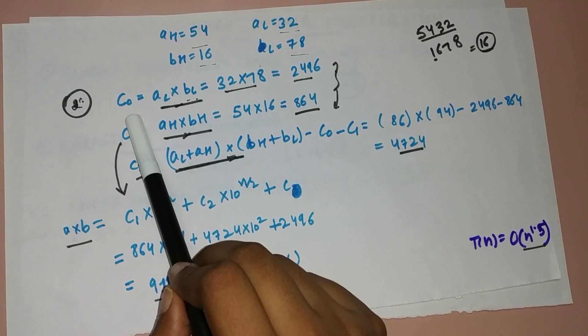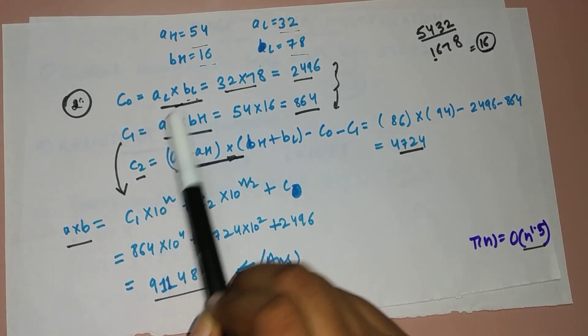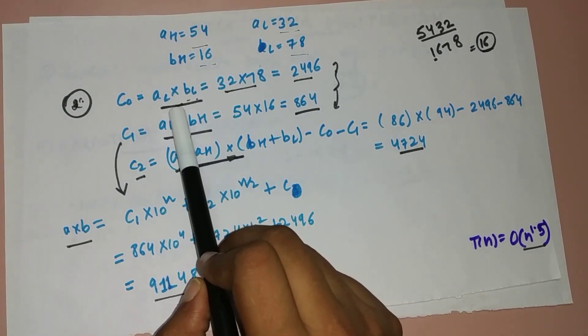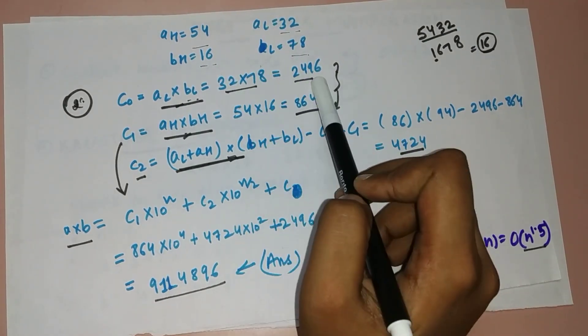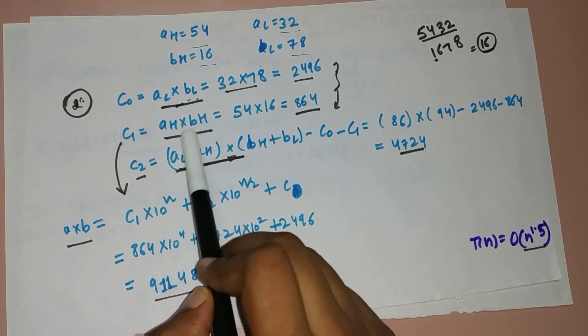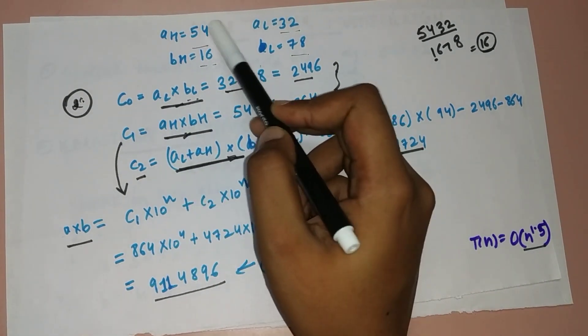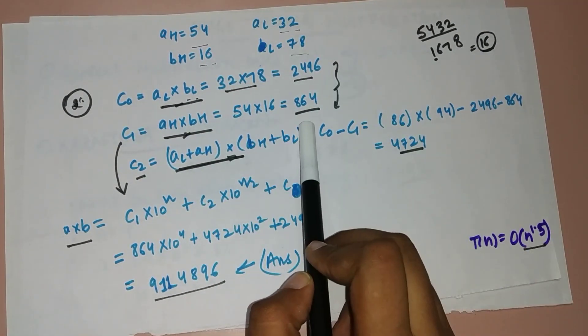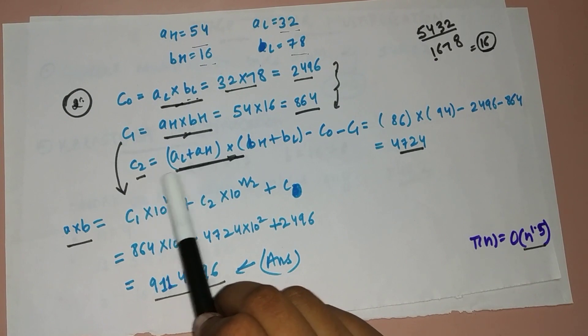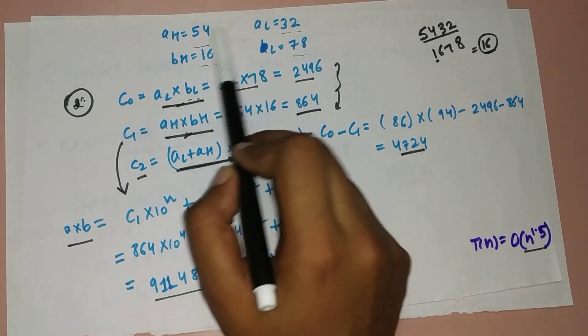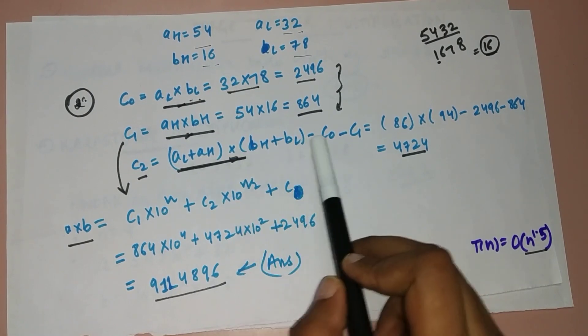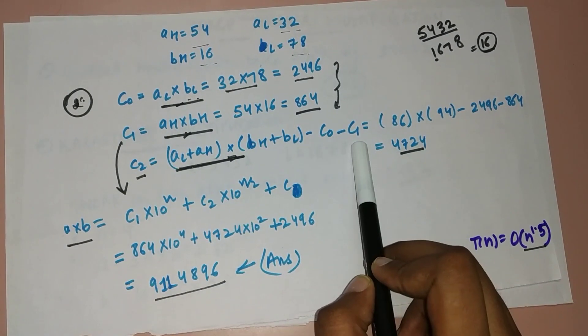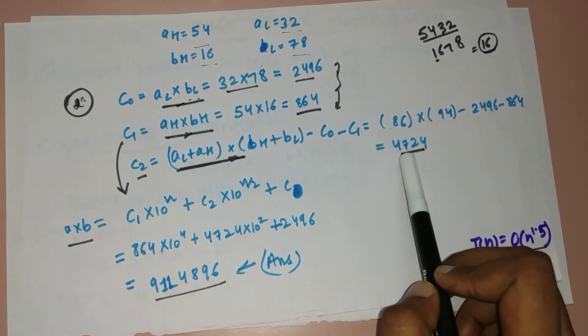Now step two is I have to calculate three variables: c0, c1, and c2. c0 is multiplication of a_low into b_low, and the result is 2496. Similarly, c1 is a multiplication of a_high into b_high, these two higher numbers, and it is 864. And c2 is a multiplication of when we add these two numbers and add these two numbers and multiply them and subtract c0 and c1 values from it.